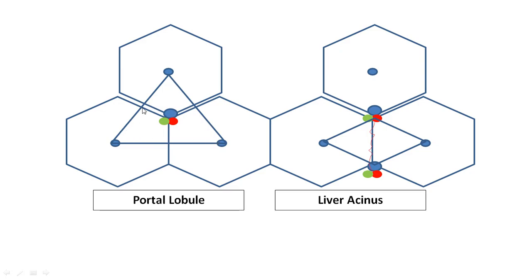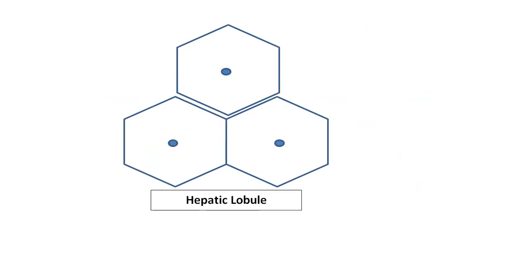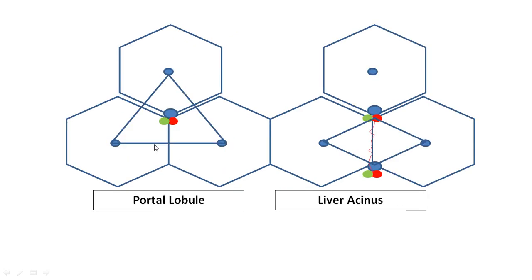The bile secretion flows from the central vein towards the portal triad, making the portal lobule the excretory or draining unit of the liver. If there is structural damage it occurs in the hepatic lobule, whereas if there is a problem with the bile ductules, it manifests as a problem in the portal lobule.